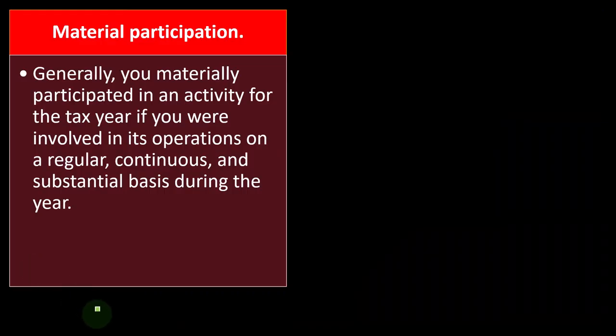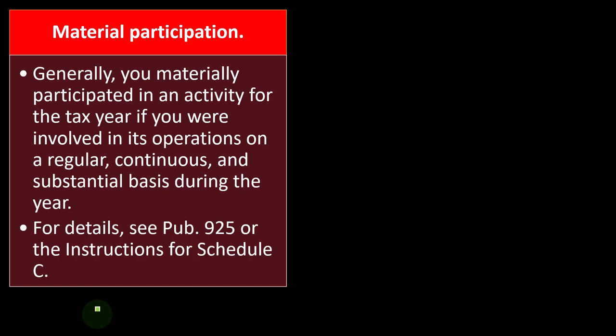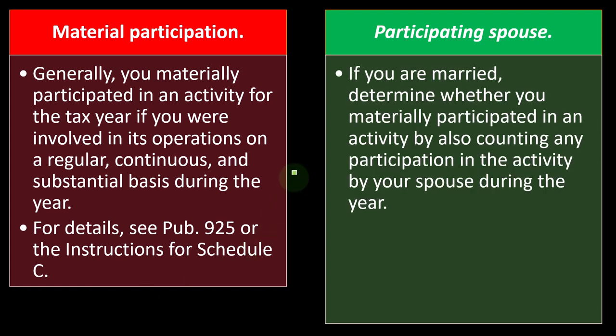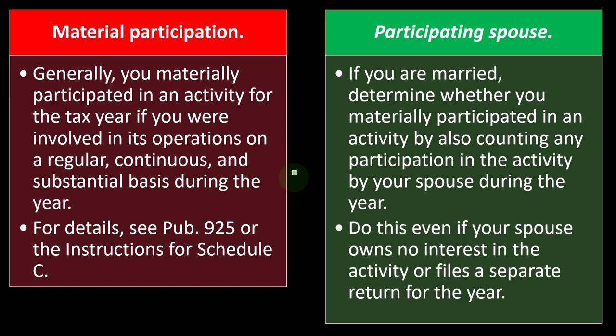Material participation: generally, you materially participate in an activity for the tax year if you were involved in its operations on a regular, continuous, and substantial basis during the year — you weren't just kicking back collecting rents; you were doing stuff. For details, see Publication 925 or the instructions for Schedule C. If you are married, determine whether you materially participated by also counting any participation in the activity by your spouse during the year, even if your spouse owns no interest or files a separate return.